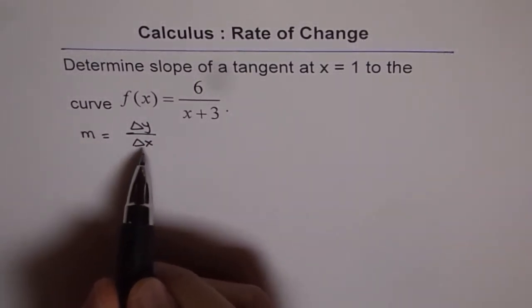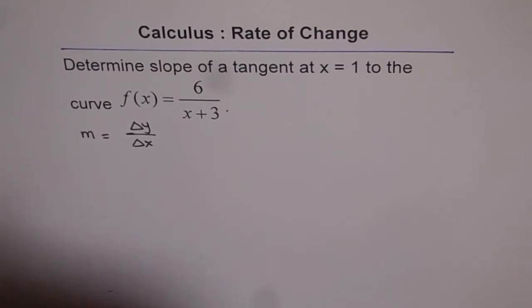Now, if this change in x is very small, so we say limit of delta x is approaching 0, then this slope becomes slope of tangent.